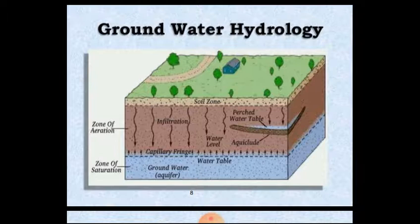In a leaky aquifer — also called an aquitard — one case has an impermeable top layer and a semi-permeable bottom layer. Another case has a semi-permeable top layer and an impermeable bottom layer. These are the examples of the leaky aquifer as we discussed.